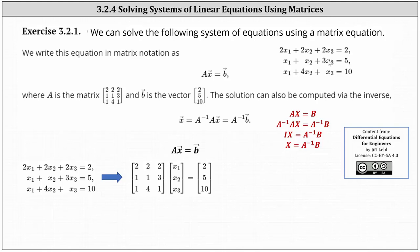We begin by writing the system of equations as a matrix equation in the form of matrix A times vector x equals vector B, where matrix A is the coefficient matrix, vector x is a column matrix containing the variables x1, x2, and x3, and vector B is a column matrix containing the constants on the right side of the equation.